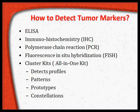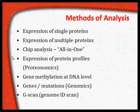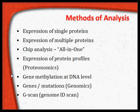The methods of analysis of tumor markers include: expression of single proteins, expression of multiple proteins, chip analysis or all-in-one kits, and expression of protein profiles — also called proteomics. Gene methylation at the DNA level is also important; people with and without methylation fare differently for chemotherapy and radiotherapy.